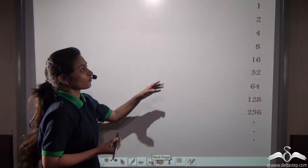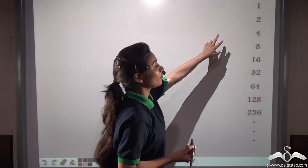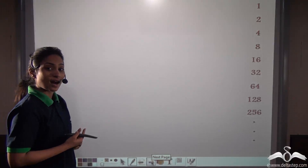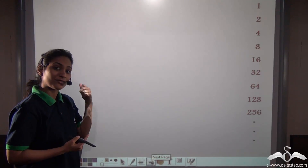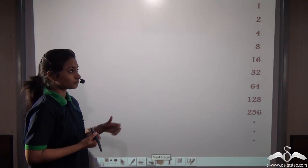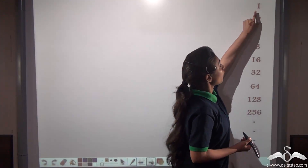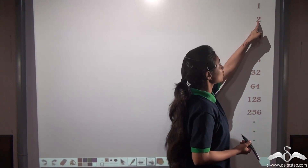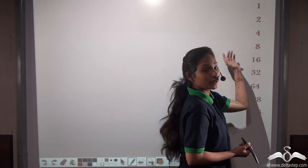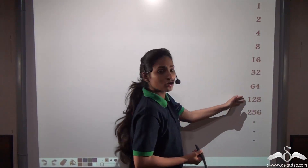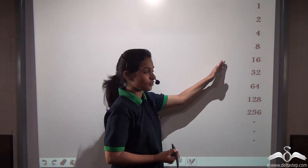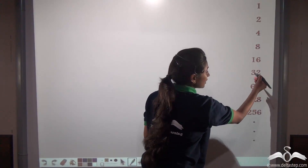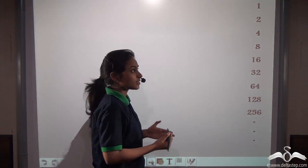Let us take the example of the number of grains of rice that the inventor of chess had asked from the emperor in our first lecture. One grain of rice in the first box, then two, then four in the third one and so on. This series — one, two, four, eight, sixteen, thirty two — is also a GP series.